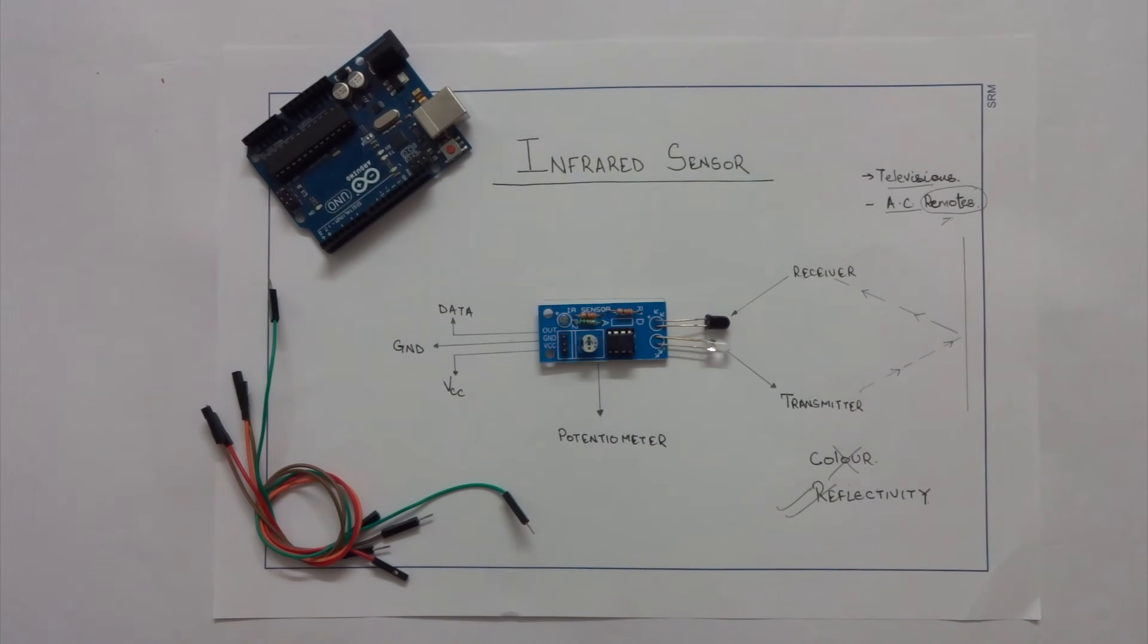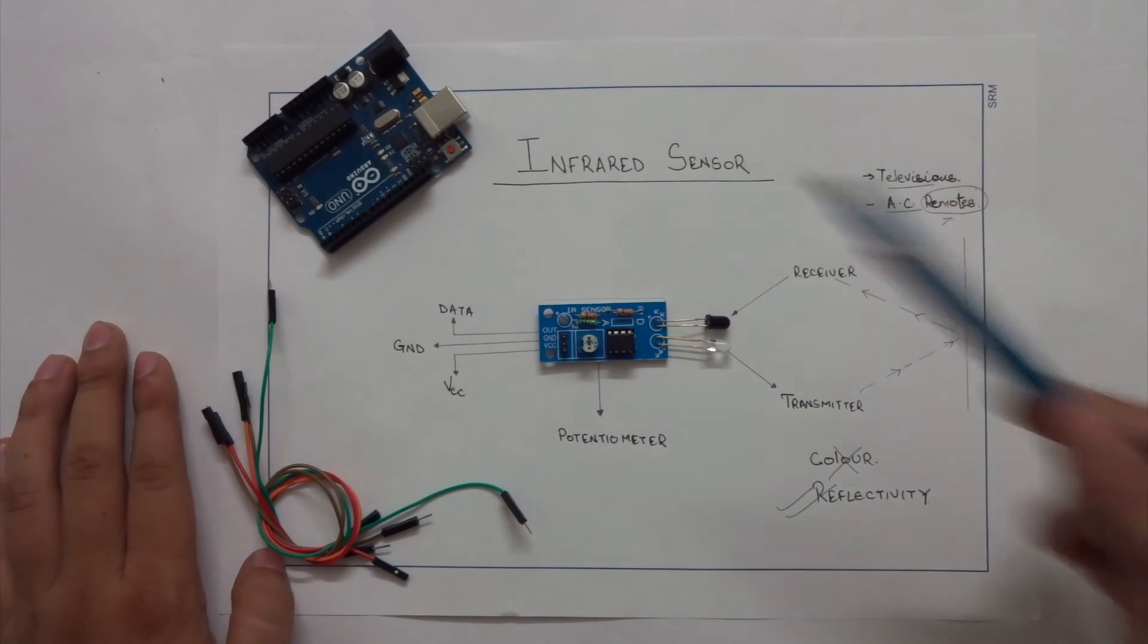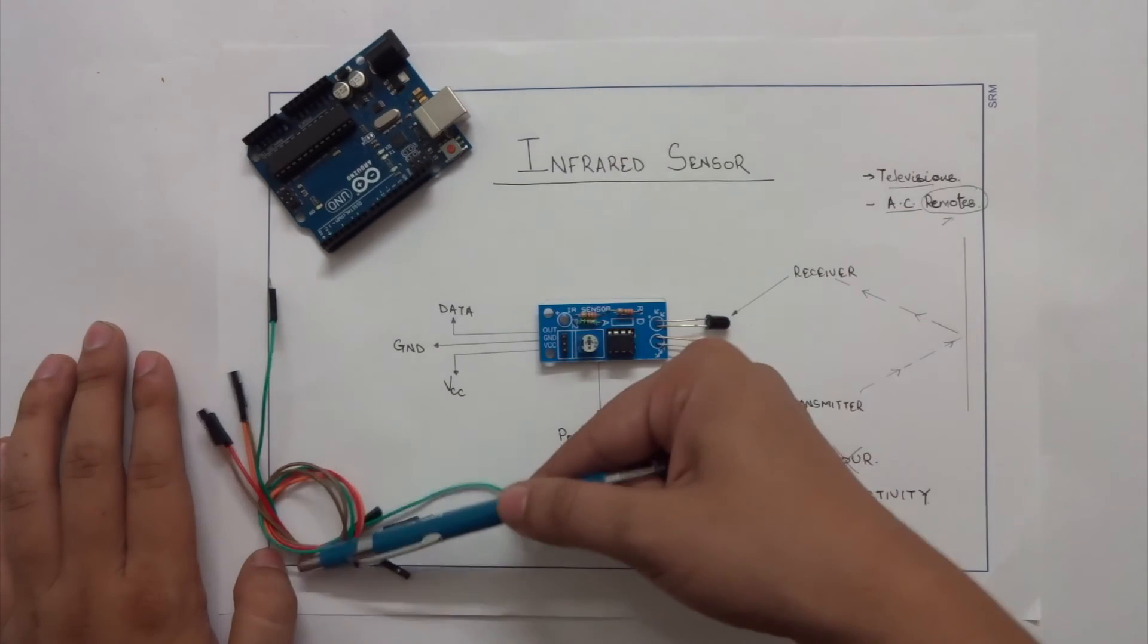So the projects which can be developed by an IR sensor are many. Today we will look into how a LED bulb will glow and turn off when our sensor comes in vicinity of some object. We will be needing an IR module, an Arduino and some jumper cables.